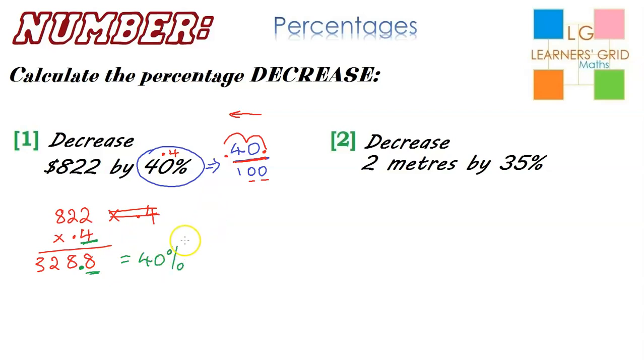All I need to do now is subtract this 40% from 822. So 822 minus 328.8. This is a minor hassle here. I've got a decimal point and an extra place value in the amount that I'm subtracting from the original amount. So I need to just add a decimal point to the original amount and a 0.